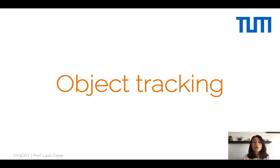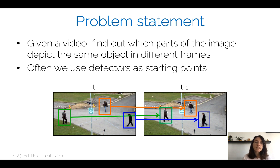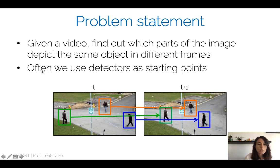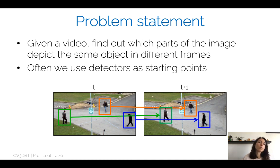Hello and welcome to the lecture on object tracking. Today we will cover single object tracking as well as multiple object tracking. When we refer to tracking, it means that given a video, we first want to find out which parts of the image depict the same object in different frames. For example, we want to know that this green box is depicting a pedestrian at frame t and this green box is depicting exactly the same pedestrian at frame t plus one — making this association between different time frames.